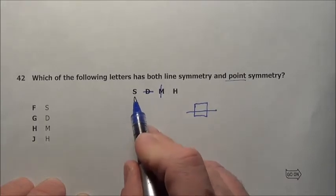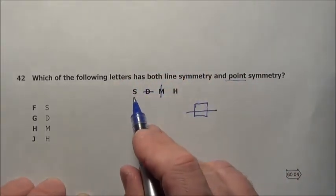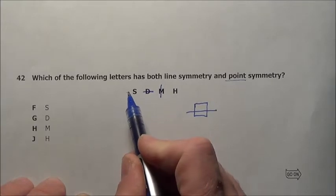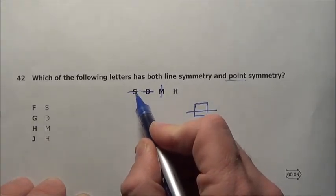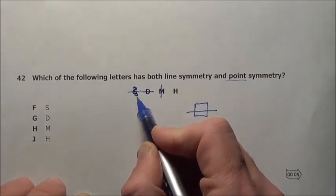S actually has point symmetry. If you take the letter S, spin it in the center, it's going to end up landing back on itself in 180 degrees. However, it doesn't have any line symmetry. Sometimes students say, well what about right there horizontal? What happens there is this point ends up here and then it starts going back like that, you end up with a backwards S.